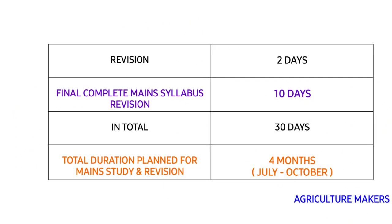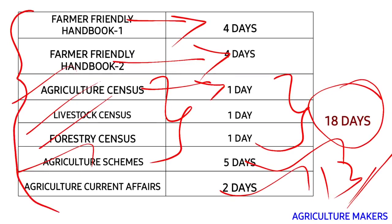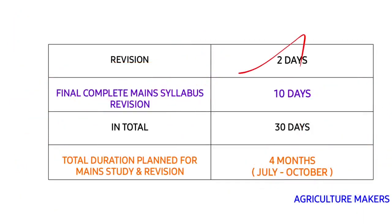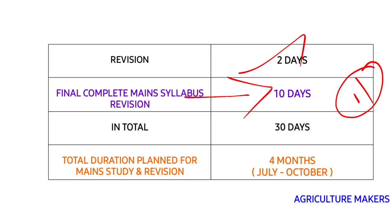In those 13 days, provide two days for revision of the Farmers Friendly Handbook, census, and agricultural current affairs. The final 11 days are for your complete revision of the main syllabus starting from July through August, September, and October — meaning the final 10 days of October are for complete revision of your mains from July to October. In total, the time duration planned for main study and revision is four months, from July to October.